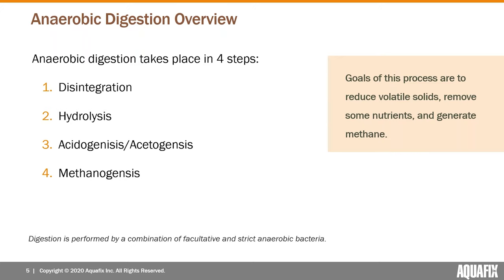The anaerobic digester process is a four-step process — sometimes called five steps if you break step three into acetogenesis and syntrophic acetogenesis, which sound similar but are slightly different. Starting with the most important step: disintegration, where you're breaking down large chunks of solids into small fine particles to give bacteria enough surface area to excrete exoenzymes, which hydrolyze particles into soluble compounds like fatty acids and smaller amino acids.